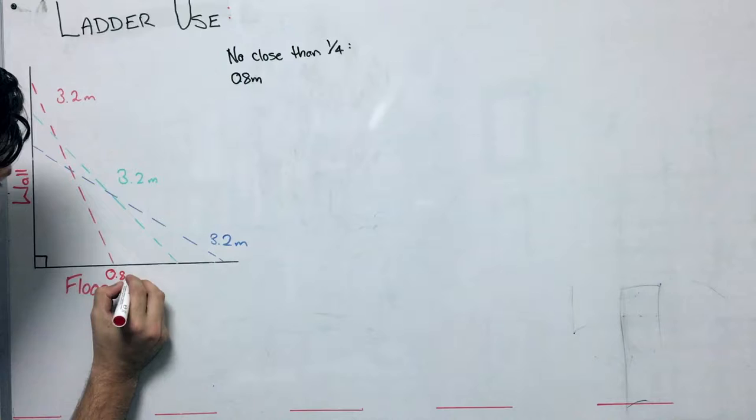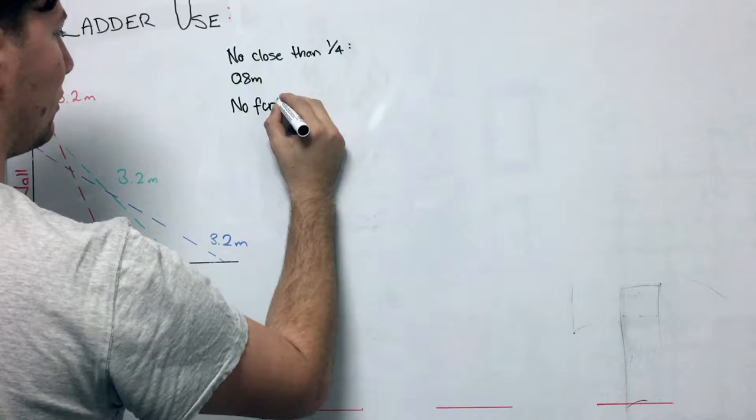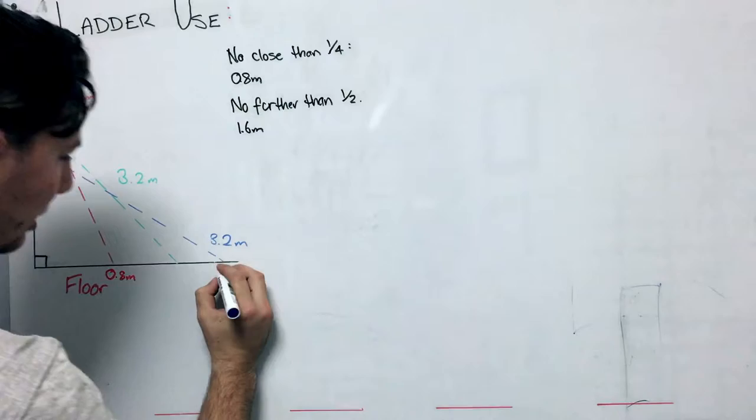And it also told us that it can be no further away from the wall than half of its length. Then half, and so we know that that will be 1.6 metres, which is represented by the blue line.